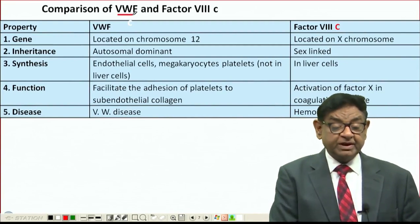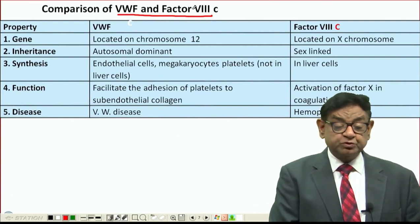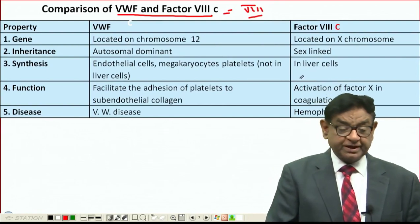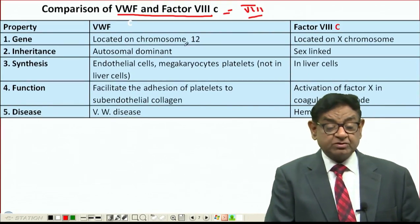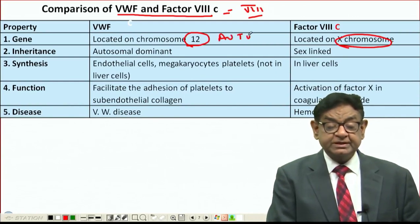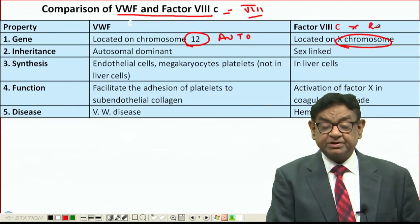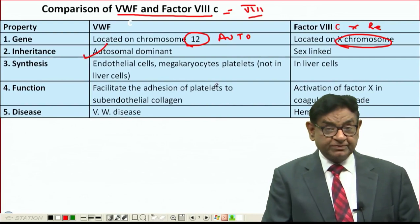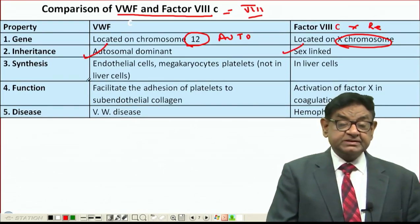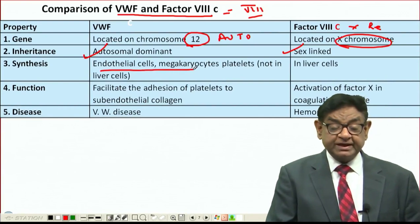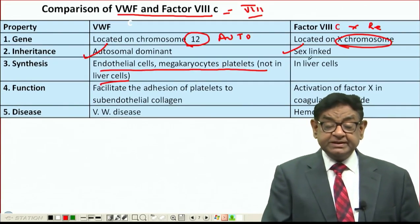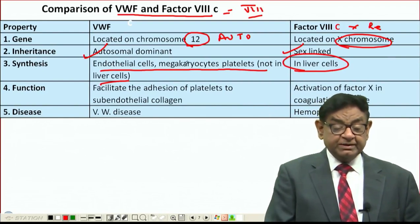Let me compare von Willebrand factor and Factor 8C — these two together make Factor 8. Regarding von Willebrand factor: its gene is on chromosome 12, whereas Factor 8C is on the X chromosome — that's why von Willebrand disease is autosomal and Haemophilia A is X-linked. Von Willebrand factor is synthesised in endothelial cells and megakaryocytes/platelets, but not in liver cells. Factor 8C is synthesised in liver cells.